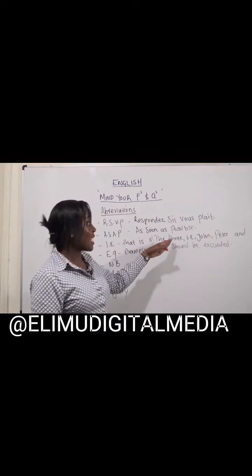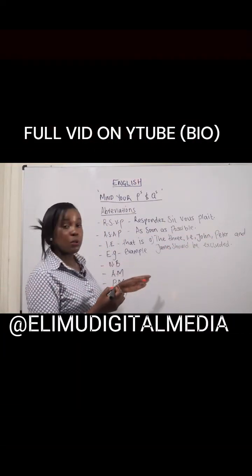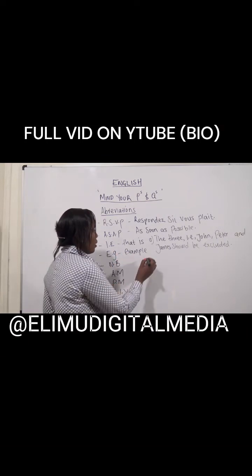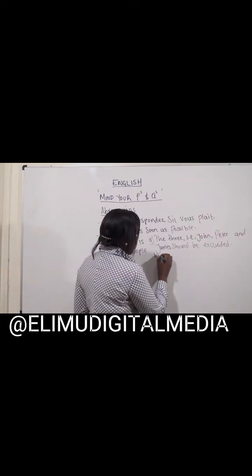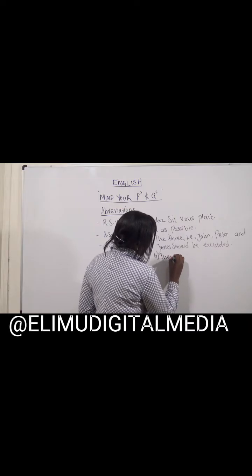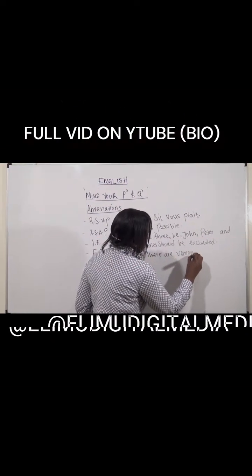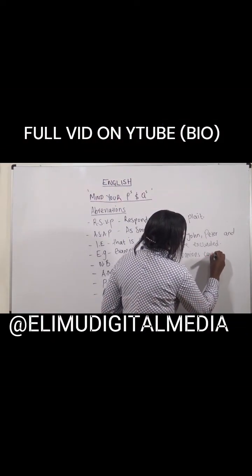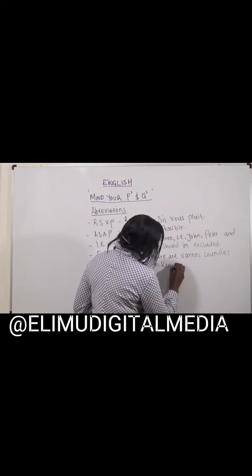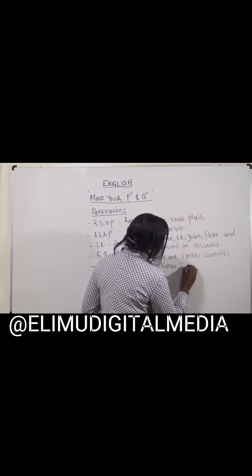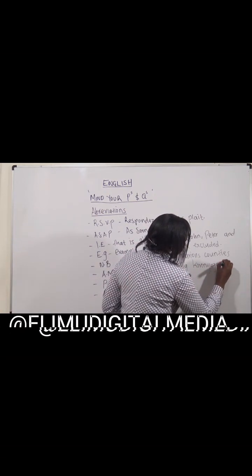So 'the three — that is, John, Peter, and James — should be excluded.' What about 'e.g.'? This stands for 'example given.' For example, talking about counties in Kenya: e.g. Kirinyaga, Nairobi, et cetera.